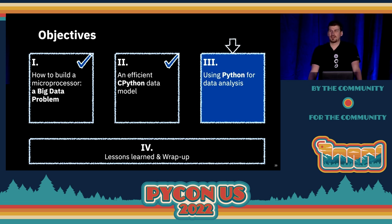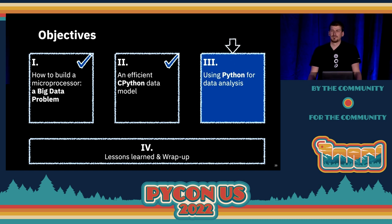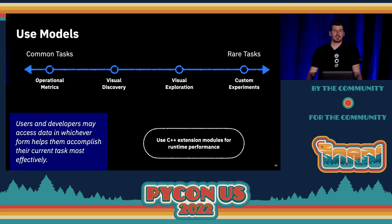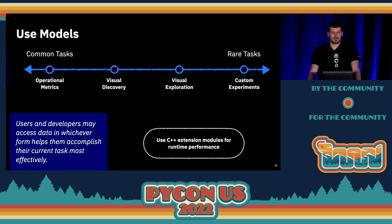Now that I've covered some details about how we built a data model to address the big data problem from the microprocessor design process, I'm going to walk through some examples of how we used Python in interesting ways to query and analyze the data. The Python environment supports multiple engineering use models: dashboards that help address common tasks, including quick access to operational metrics and visual discovery, as well as less common tasks including ad hoc analysis and being able to answer questions we may not yet even know that we have.